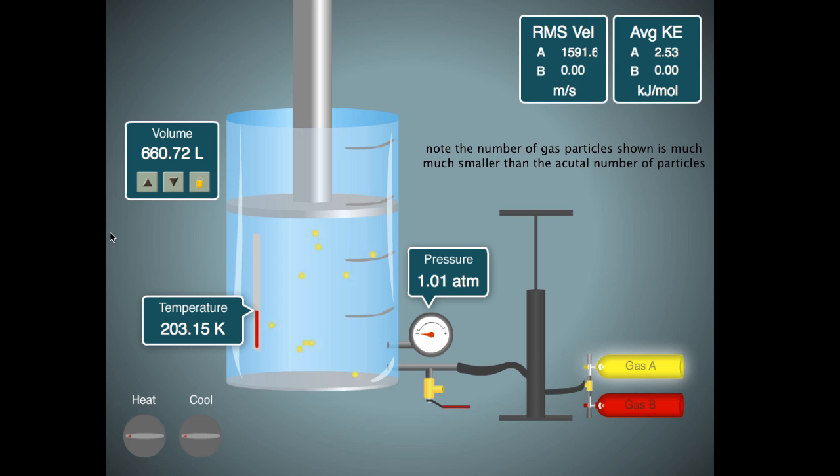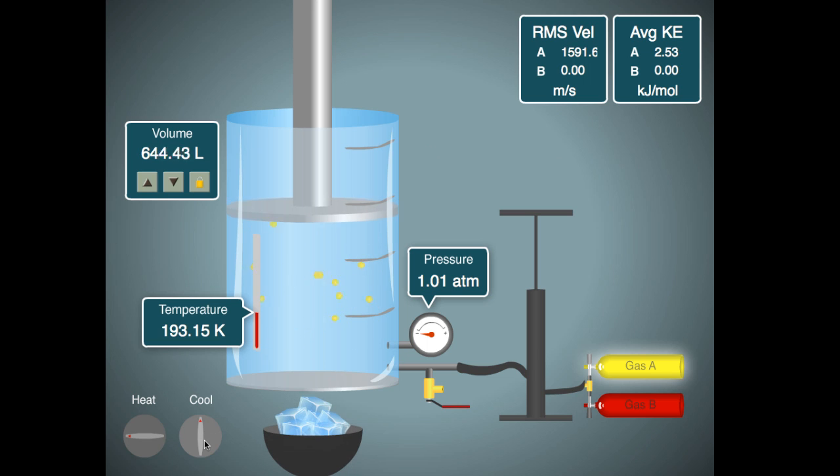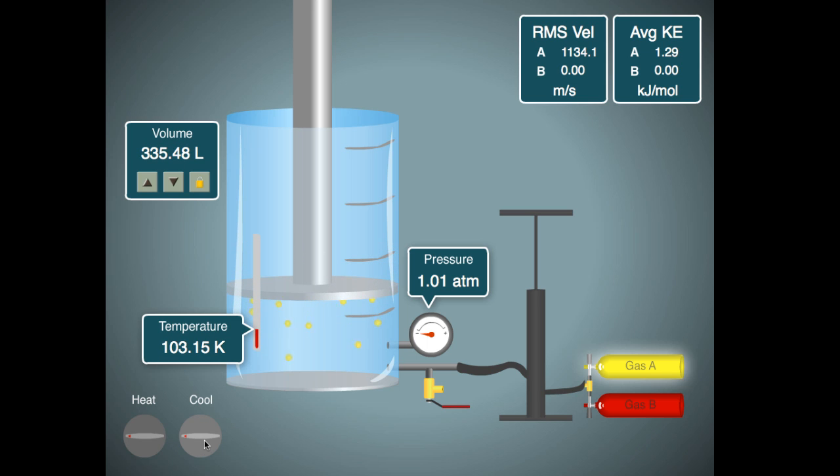So let's see what happens if we lower the temperature. If I cool it down here, I can lower the temperature down to about 100 Kelvin, and when I do, I see that the volume is decreased, and in fact, it's about half of what it was before, because the temperature is roughly half what it was.